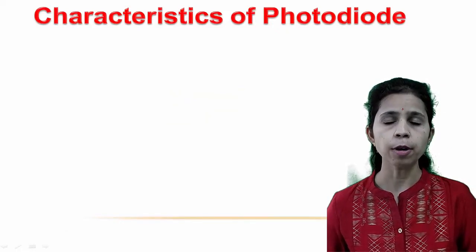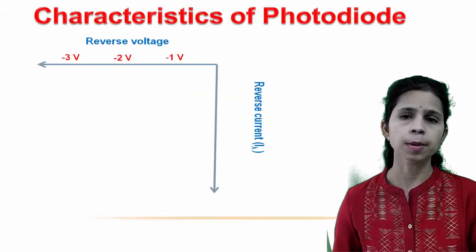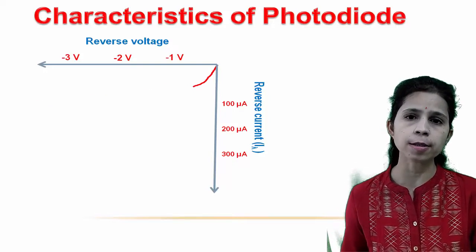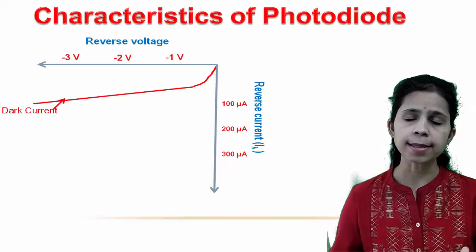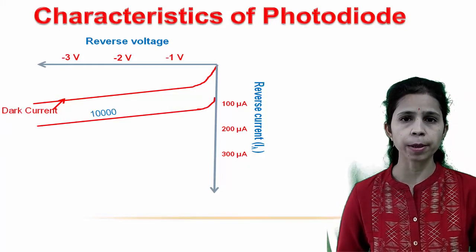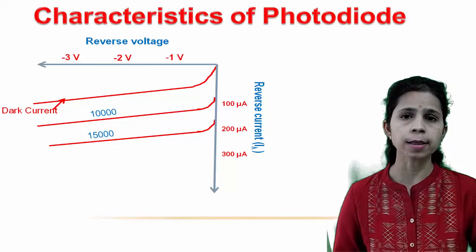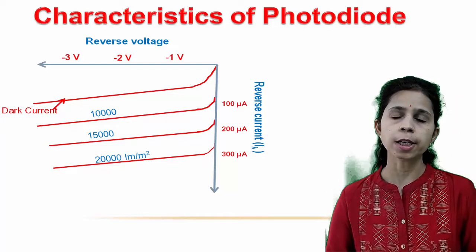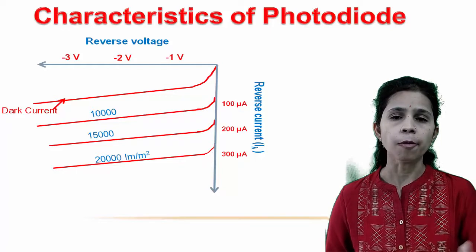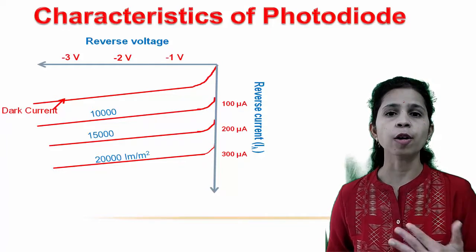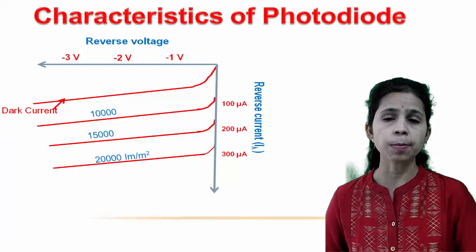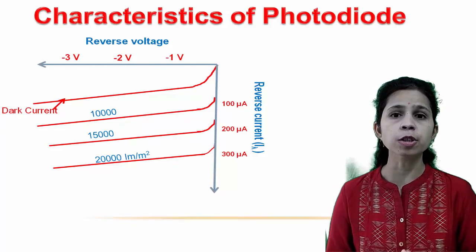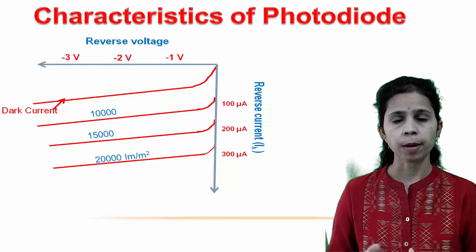The characteristics of a photodiode are similar to those of a diode in reverse bias, but light makes the difference. When there is no light, you get a dark current. As the intensity of light increases — say 10,000 lm/m² — the reverse current also increases; at 20,000 lm/m², it increases further. By changing the illumination, the level of reverse saturation current can be changed. A photodiode can turn its current on and off in nanoseconds, making it one of the fastest photodetectors, used in applications requiring very fast switching.